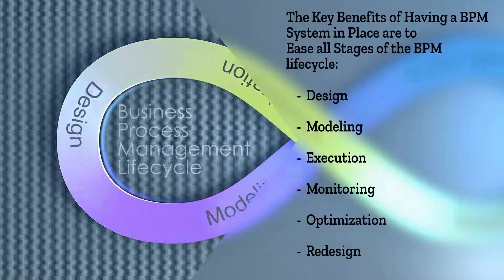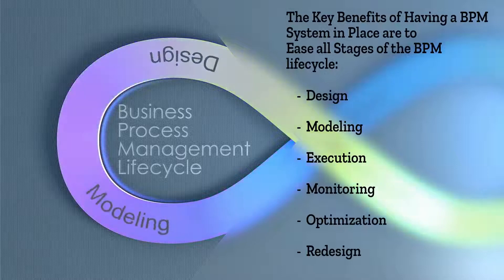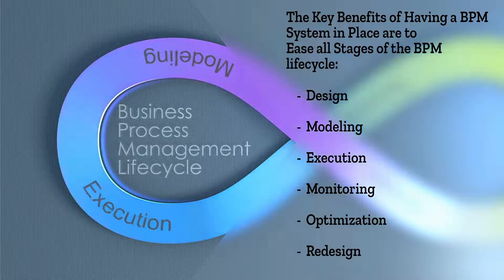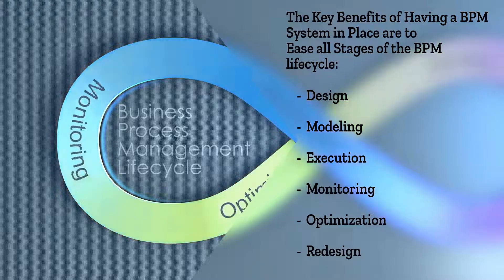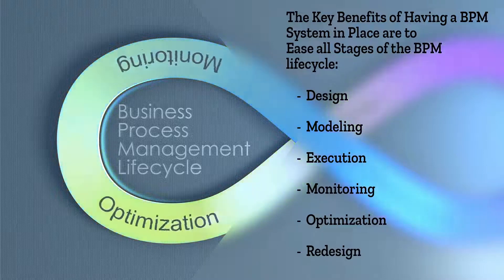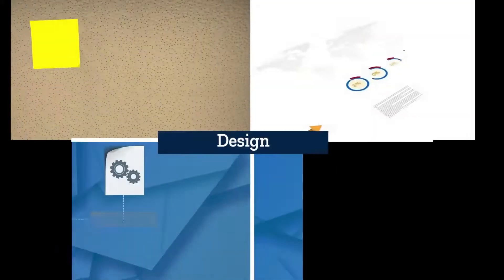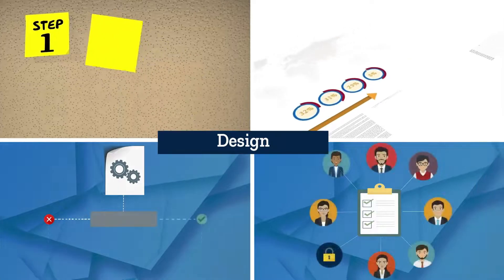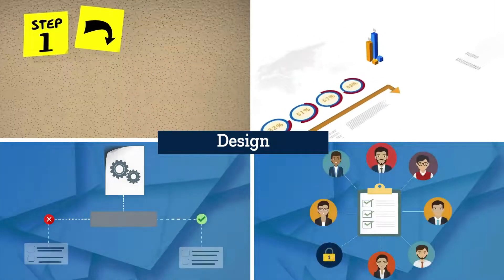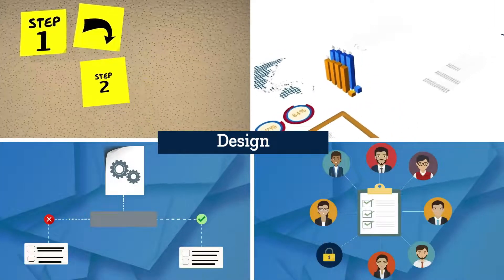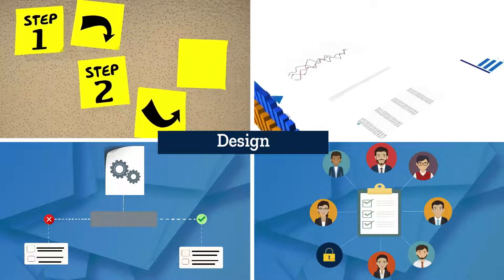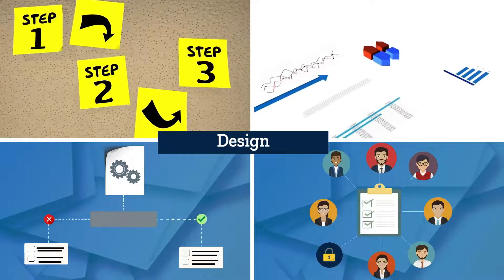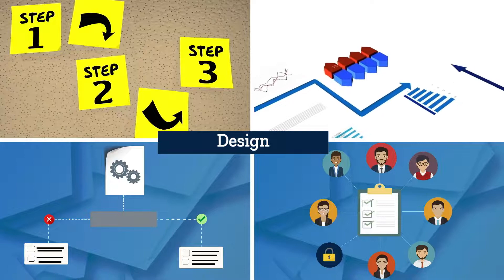The main advantage of using a BPM system is that it enables companies to efficiently manage all stages of the so-called BPM life cycle, which includes design — identifying the steps, flows, conditions, constraints, participants, and all of the necessary elements for performing a business process from start to finish.